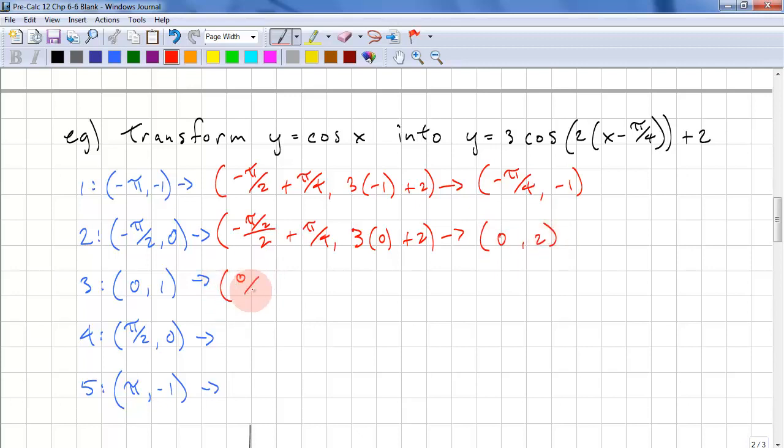Here we have 0 over 2 plus pi over 4, 3 times 1 plus 2. This gives us pi over 4 and 5. We have pi over 2 over 2 plus pi over 4, 3 times 0 plus 2. And that gives us pi over 2 and 2.